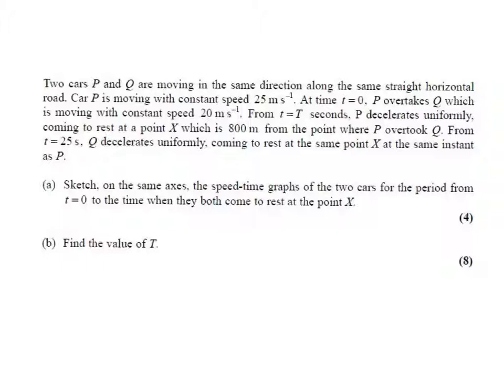We're given lots of information about both of these cars. We're told that car P is moving with a constant speed of 25 meters per second. And at time T equals zero, P overtakes Q. So at that point T equals zero, we know that they're in the same position.